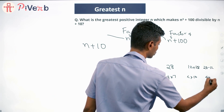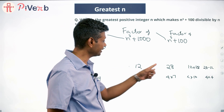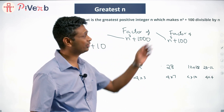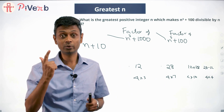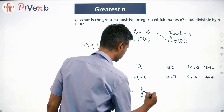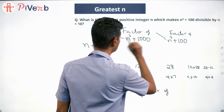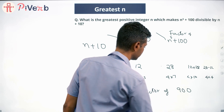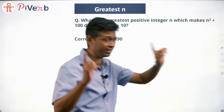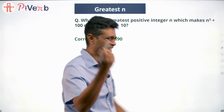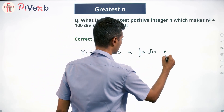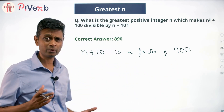We find the difference: from n cubed plus 1000 we subtract n cubed plus 100 and we get 900. So n plus 10 is a factor of 900. I'm going to reframe the entire question to just this one statement: n plus 10 is a factor of 900.